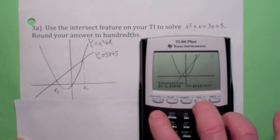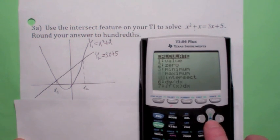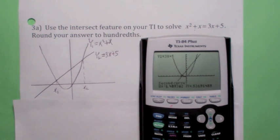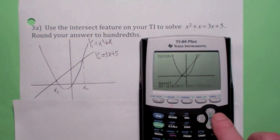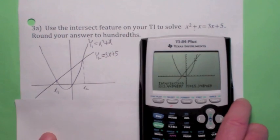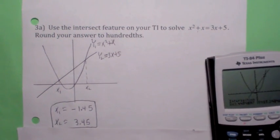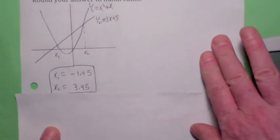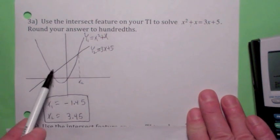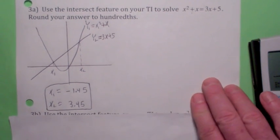Okay, to do that, you would go second, calc, intersect. The first function is x squared plus x, yes. Second function is 3x plus 5, yes. Now before you hit guess, before you hit enter a third time, get close to the other point of intersection, did you get about 3.45? So those are the two solutions to this equation. The two solutions to this equation using the intersect feature are precisely the two points where the graphs cross.